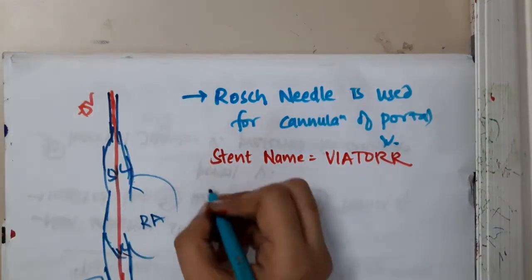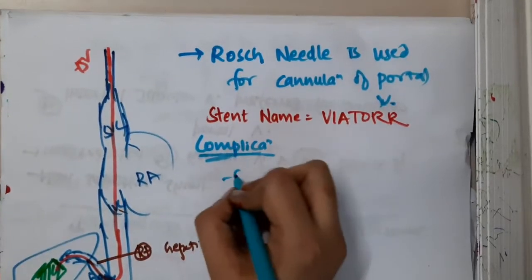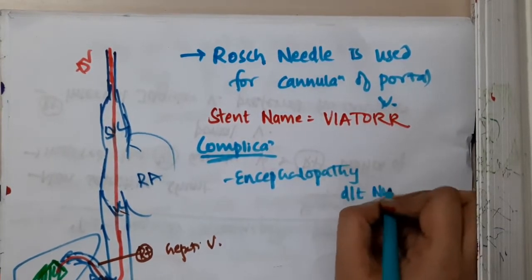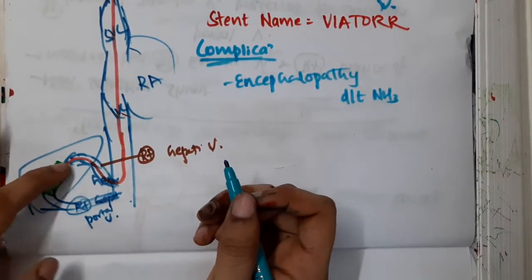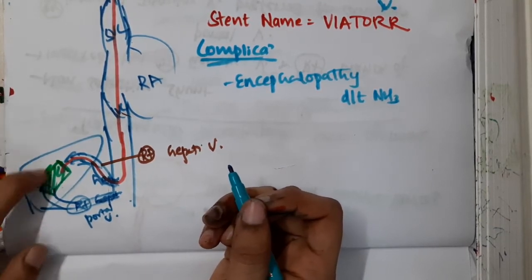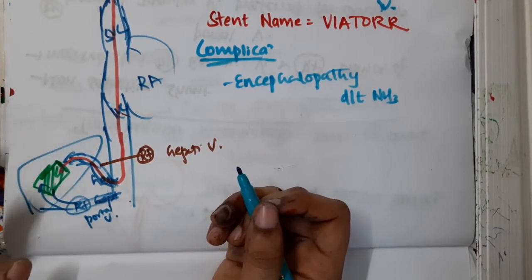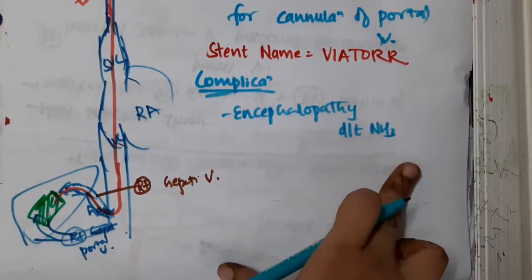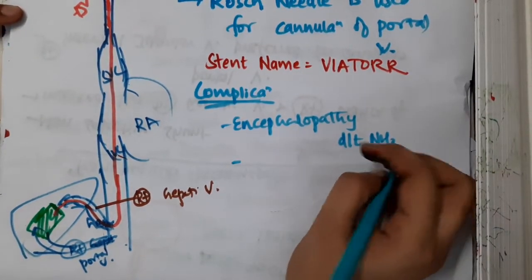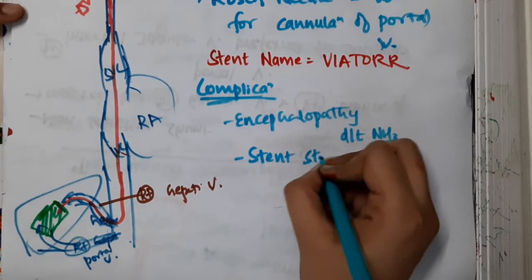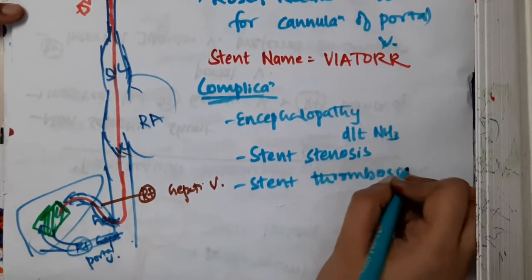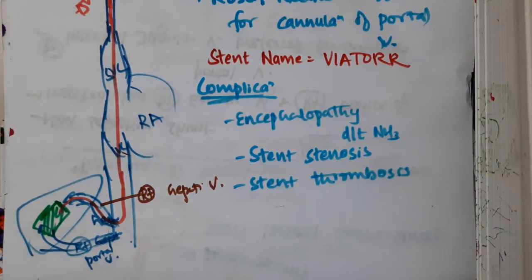Regarding complications of the procedure: first and foremost, encephalopathy is seen. This is because you are directly sending blood from the portal vein into the hepatic vein with no liver involvement in this flow. Normally, detoxification of ammonia occurs in the liver, but because of shunting blood directly from the portal vein to the hepatic vein, ammonia detoxification does not occur. So ammonia accumulates, resulting in encephalopathy. Additionally, the shunt may become stenosed or there can be shunt thrombosis.